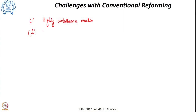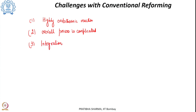At the same time, we have also seen that the overall process is complicated — complicated in the sense that there are several steps involved. The number of steps involved are more when it comes to the conventional steam methane reforming process. Some of the steps are endothermic in nature like the reforming reaction, and some reactions are exothermic, so there are integration challenges related to the different units. A lot of thermal management needs to be taken care of so as to use the process energy efficiently.